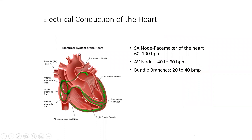Let's talk about the electrical conduction of the heart. There is the SA node located in the back of the right atrium. This is called the pacemaker of the heart. The rate for the SA node is 60 to 100 beats per minute in a resting state, which is the same as normal pulse rate. The SA node initiates the impulse to start the contraction process.